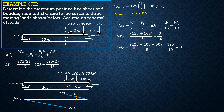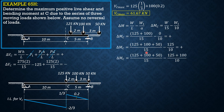When load 2 (100 kN) is just to the left of C, it becomes part of W1. W remains the same total, but W1 is now 125 plus 100. So delta M sub C equals 275 over 15 minus the quantity 125 plus 100 over 10. This time it is negative.